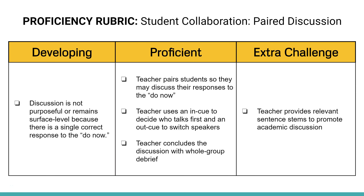Let's take a look at this proficiency rubric one more time. Again, you'll need to pair students using effective directions so they can discuss their responses to the do now. You'll use an end cue to decide who goes first and then an out cue to switch partners.